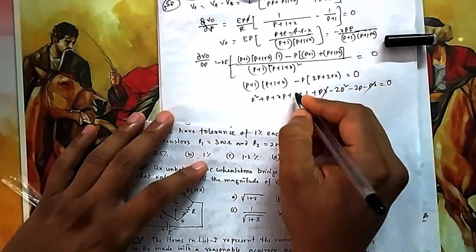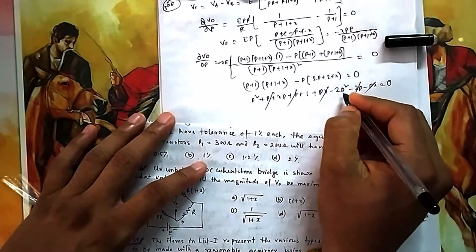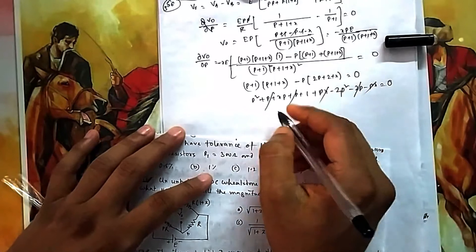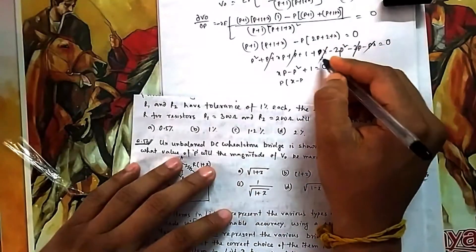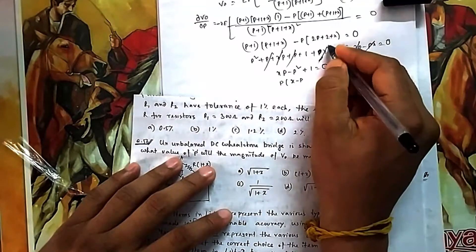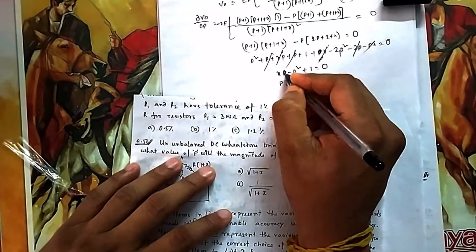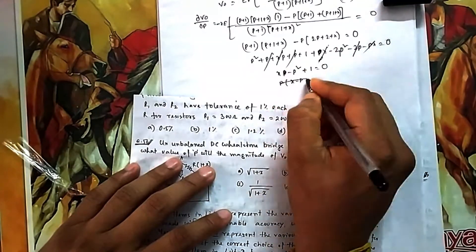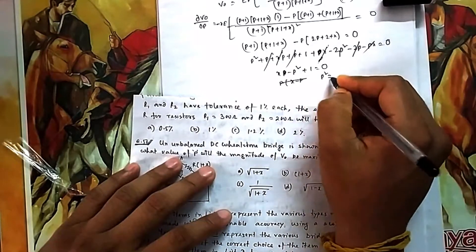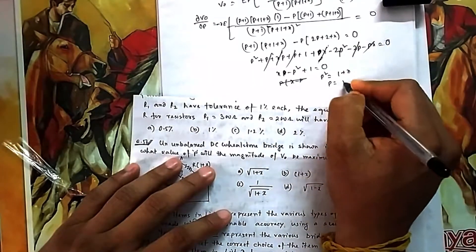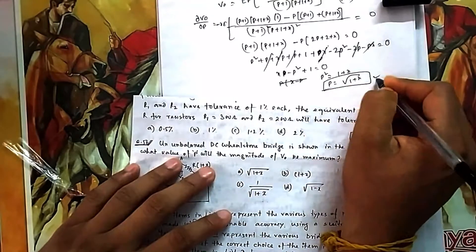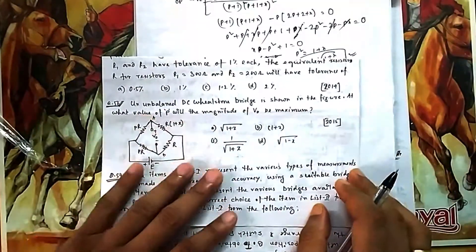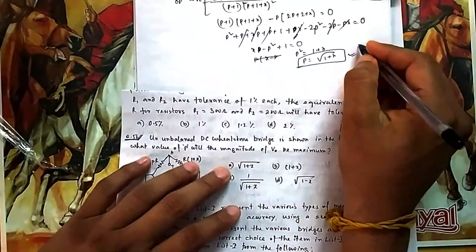After cancellations — xp cancels, p and 2p cancel — we are left with x only, giving p² = 1 + x, therefore p = √(1 + x). The negative root is discarded, so the positive value is p = √(1 + x). That is option A.